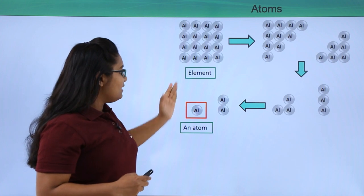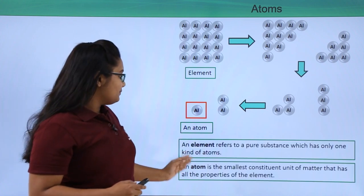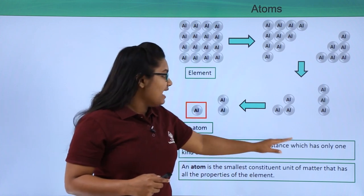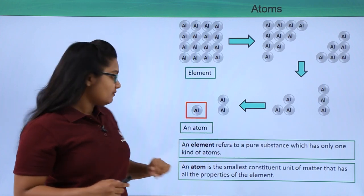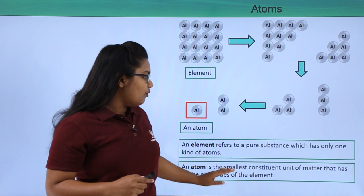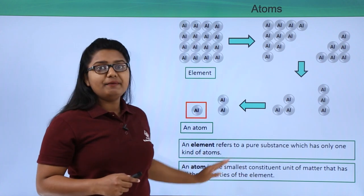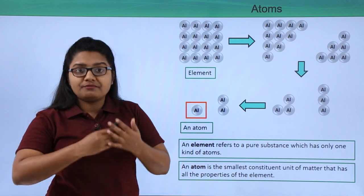We define an element and an atom like this: an element refers to a pure substance which has only one kind of atoms. And an atom is the smallest constituent unit of matter that has all the properties of that element from where it comes.